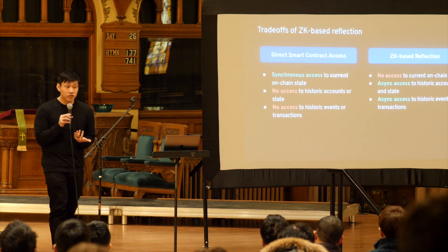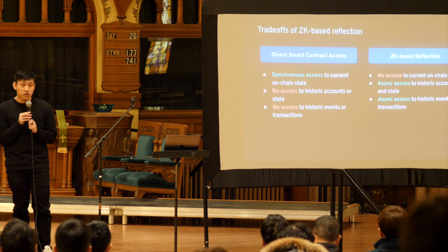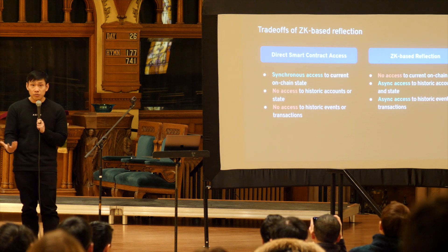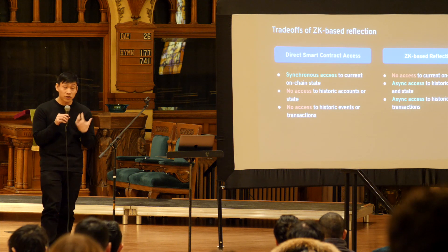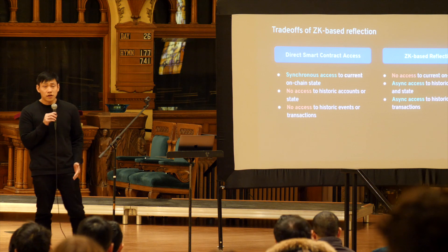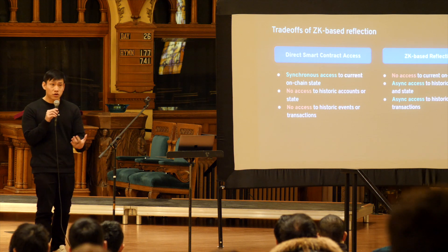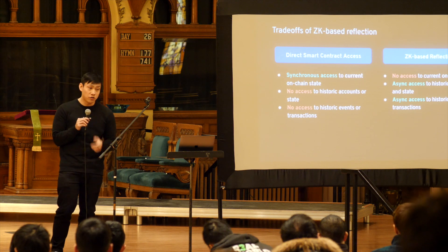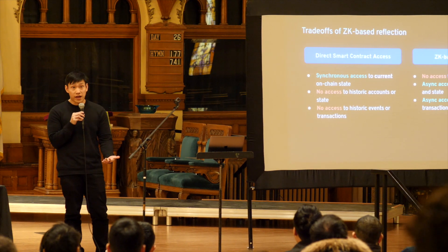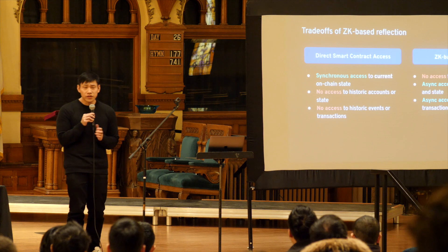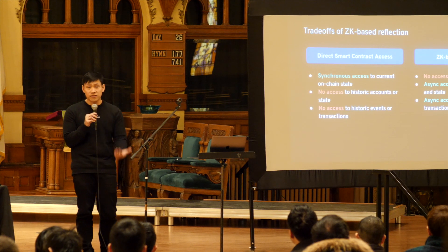Let's look at the trade-offs between ZK-based reflection and traditional smart contract access. With a vanilla smart contract, you get synchronous access to the current on-chain state — which fundamentally requires consensus. ZK does not enable you to access the current state because it's fundamentally synchronous. On the other hand, to preserve decentralization, smart contracts have no access at all to historic accounts, states, transactions, or receipts. With ZK, we're able to give asynchronous access to all of that information. So ZK provides a trade-off between synchronous and asynchronous while enabling you to access a vastly larger set of information.